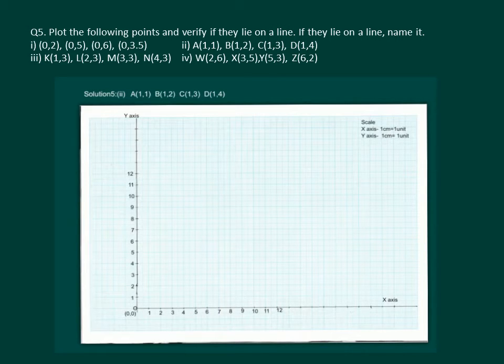In the second part, we have to plot point A, B, C and D. We start with point A, the coordinates are (1,1) that means 1 on the x-axis and 1 on the y-axis. Hence, we have A(1,1).